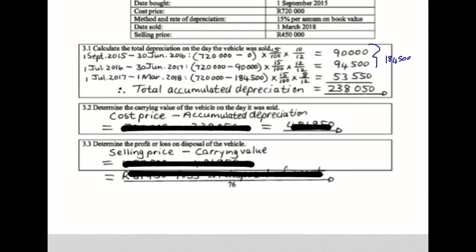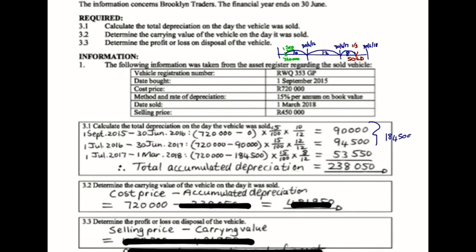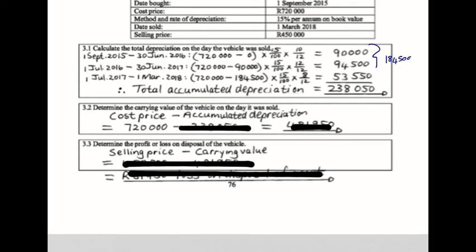Question two: determine the carrying value on the day it was sold. The cost price is unchanged at R720,000, but the accumulated depreciation is the very important factor. I cannot use the accumulated depreciation from only the first or second year — it has to be the accumulated depreciation up to the date I sold it, to give the most accurate carrying value. The accumulated depreciation up to the date of sale is R238,050, therefore leaving the carrying value at R481,950.